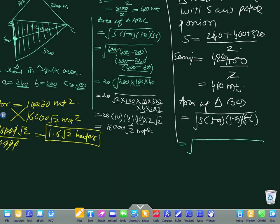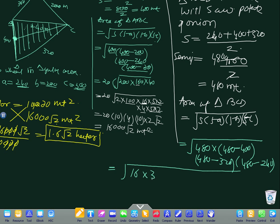This equals the square root of 480 into 80 into 160 into 240. Let's factorize it: 16 times 3 times 10, then 8 times 10, 16 times 10, and 8 times 3 times 10.